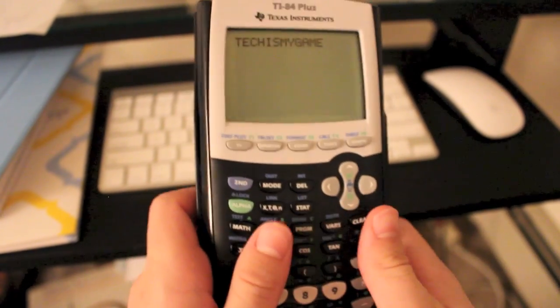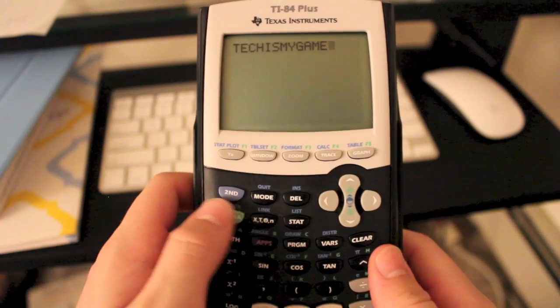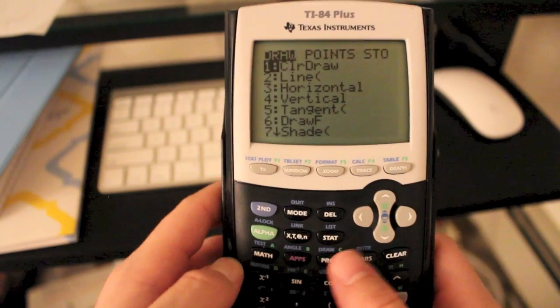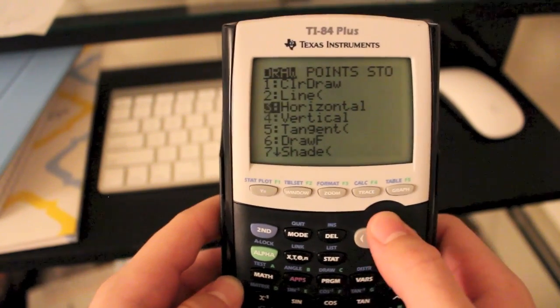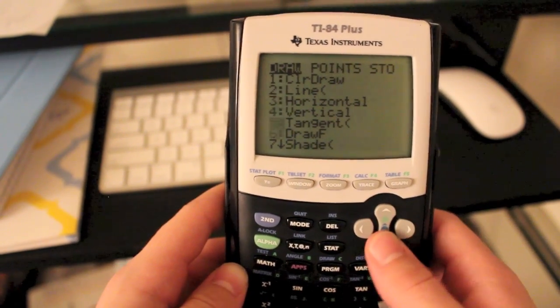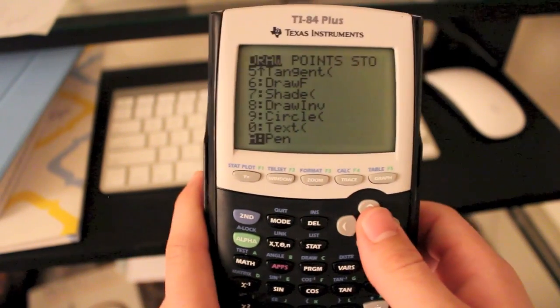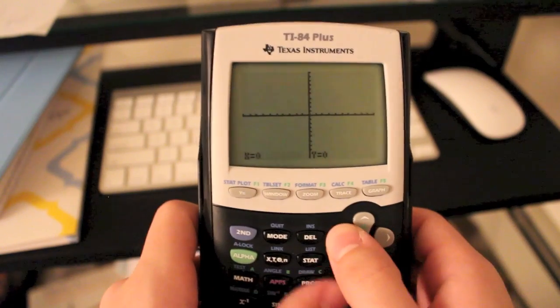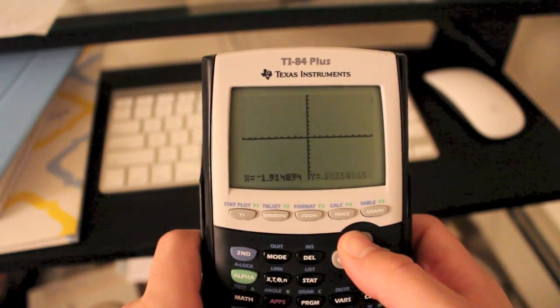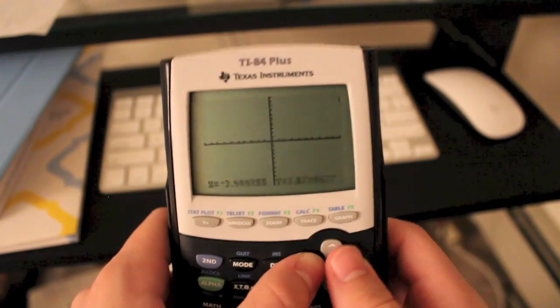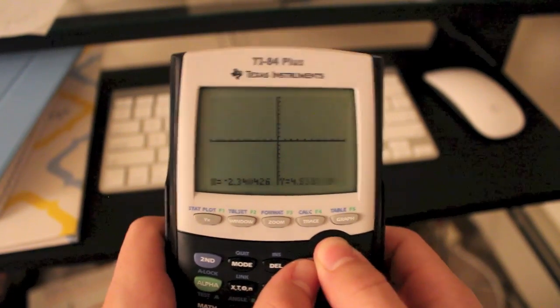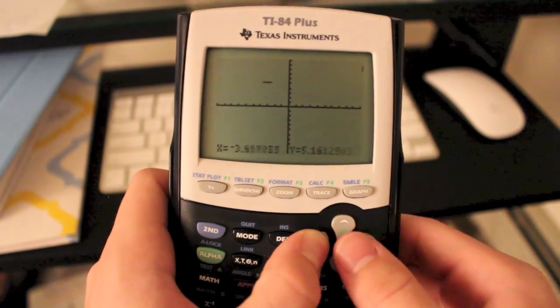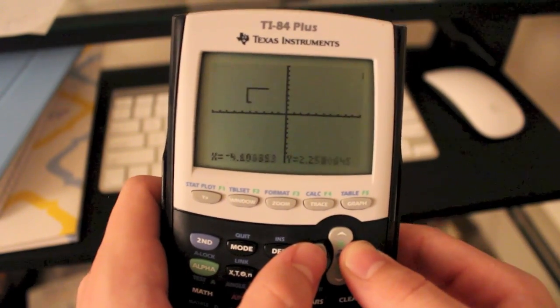So the next thing I want to show you guys is how to draw on your calculator, and yes, you can do so. So to do that, you're going to want to go over to second and program, that would be draw. And all the way at the top, you're going to see clear draw, but there's nothing to clear. So just go all the way down to the bottom. Or you can just put an H where it says pen. And then you're on the coordinate plane. If you move your cruiser around, you're going to see a little thing moving around. And to start drawing, go over and hit the enter key.